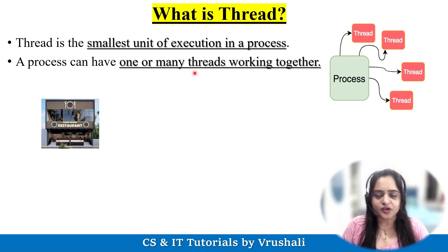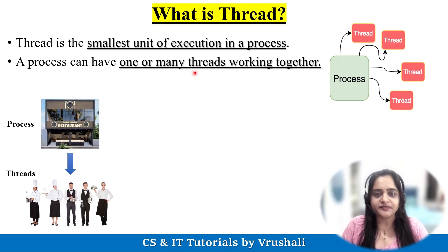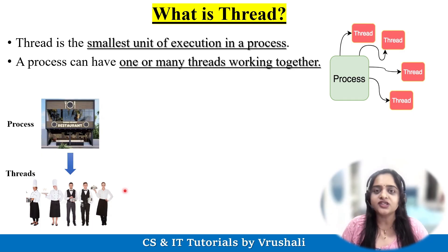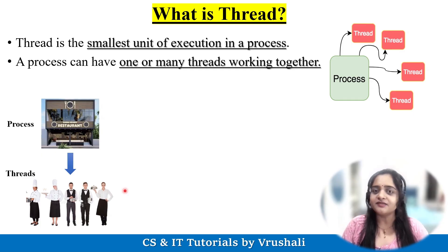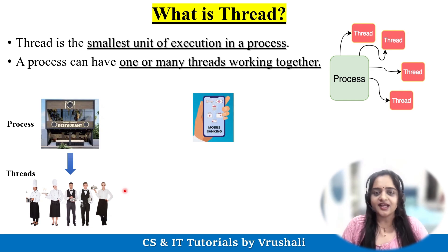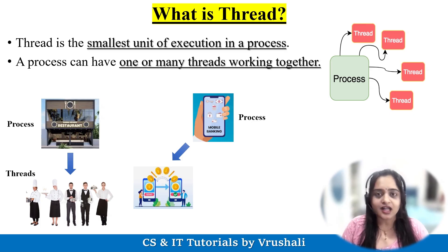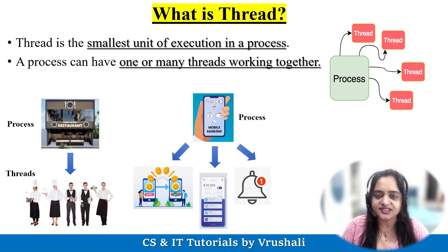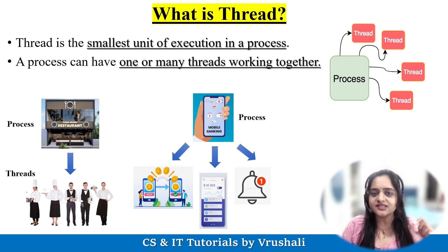Let's understand with an example. Suppose there is a restaurant — the restaurant works like a process. In the restaurant there are multiple waiters, so the waiters work like threads. Every waiter has their own individual responsibility to serve the customers. So one process has multiple threads. Again, take an example of a mobile banking application — this is the process. One thread handles account transaction functionality, another thread handles login details, another thread handles notifications, and another thread handles background details. So one process has multiple threads.